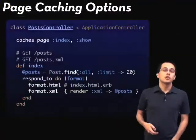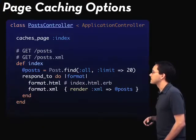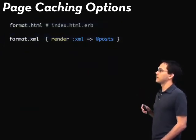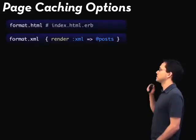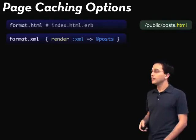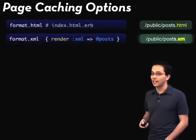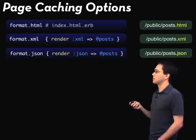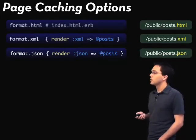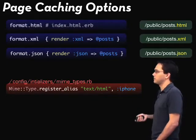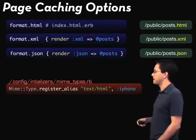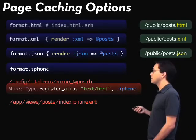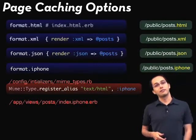So let's take one more look at the code we added. All we added was caches_page :index and :show. There's something interesting going on here though. In our respond_to block, we say that we accept HTML and XML. So what this is going to do is cache at post.html, and if somebody goes to the XML version, by default it's going to cache post.xml. We can add a JSON format, which will cache at post.json. We can also add custom MIME types to our Rails application — for instance, an iPhone MIME type. We add that, create an index.iphone.erb file, and then add format.iphone, which by default will cache as post.iphone, as you might expect.